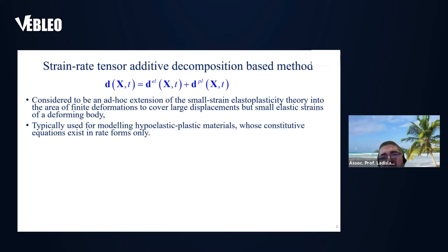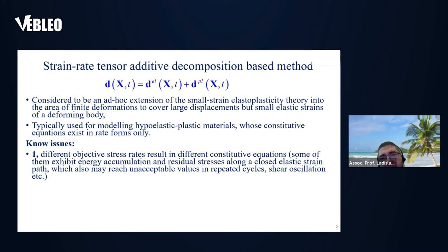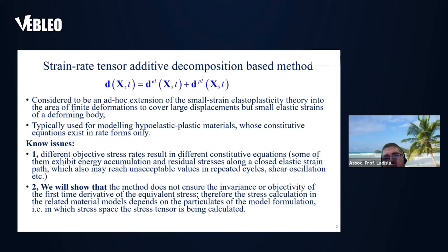It is typically used for modeling hypoelastic-plastic materials whose constitutive equations exist in rate form. There are some issues with this method: different objective stress rates result in different constitutive equations, and a few exhibit unnatural physical behavior such as shear oscillation and energy accumulation along a closed elastic strain path. We will also show that the method does not ensure the invariance or objectivity of the first time derivative of the equivalent stress, so stress calculation depends on the particularities of the model formulation.